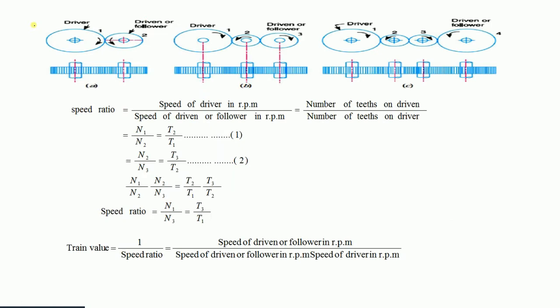For two meshing gears, the speed ratio is N₁/N₂ = T₂/T₁. When the driver rotates clockwise, the driven gear rotates anticlockwise — we denote this with a minus sign to indicate direction. If there are three gears, the driver rotates clockwise, the middle gear anticlockwise, and the end gear clockwise. With an odd number of gears, the direction of rotation of the last gear is the same as the driver.